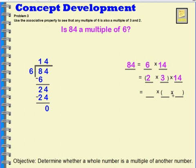What I can also do is I can also move the parentheses. Three times 14 is going to give me 42. So two times 42 would give me 84. So 84 is a multiple of six and it's also a multiple of two and three.